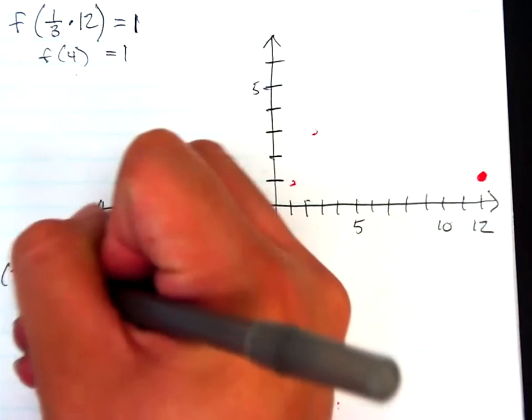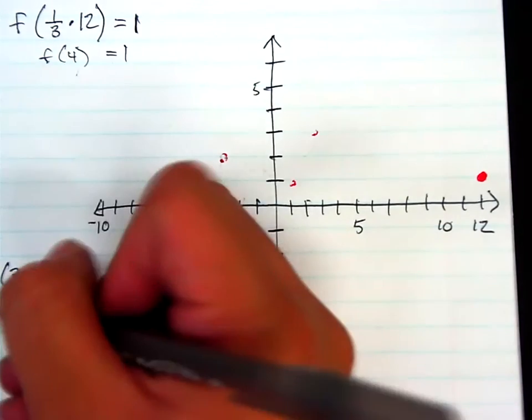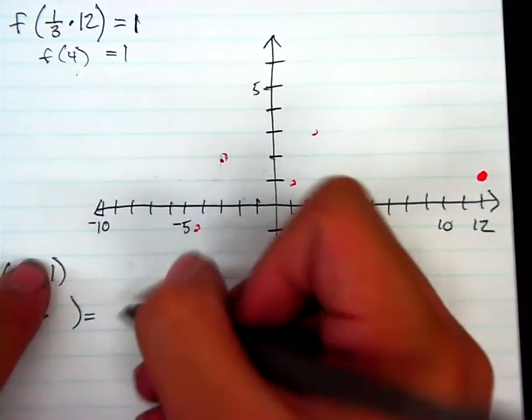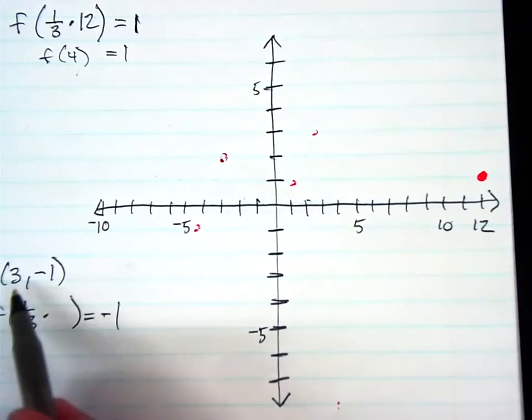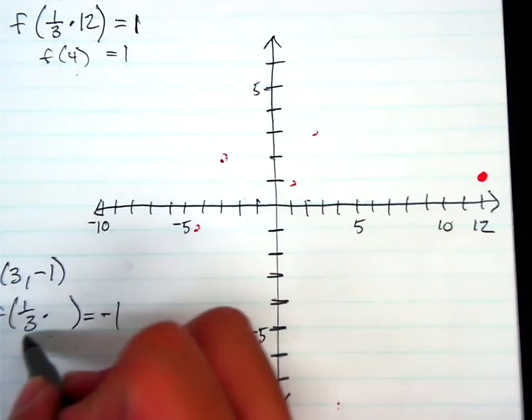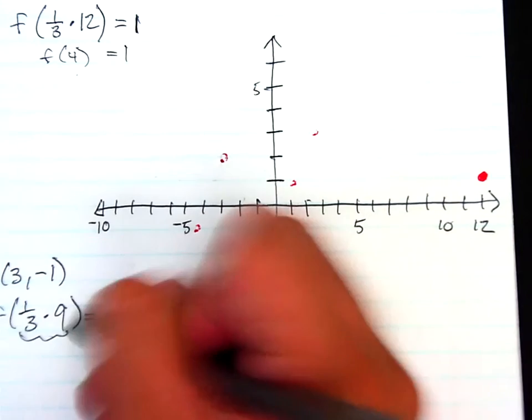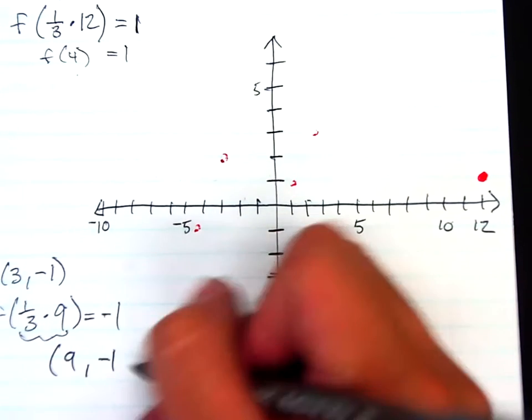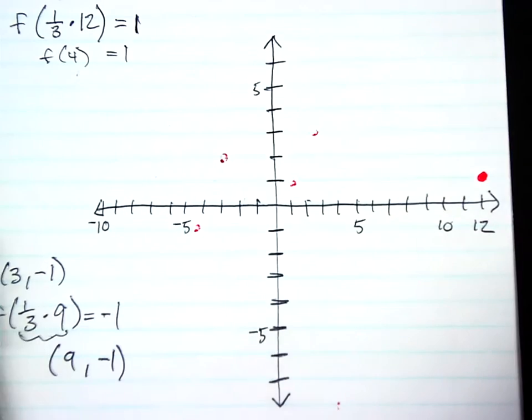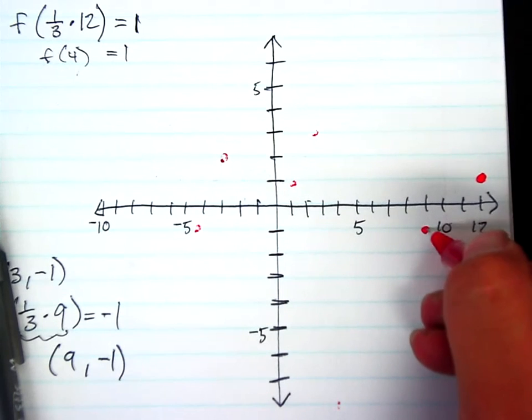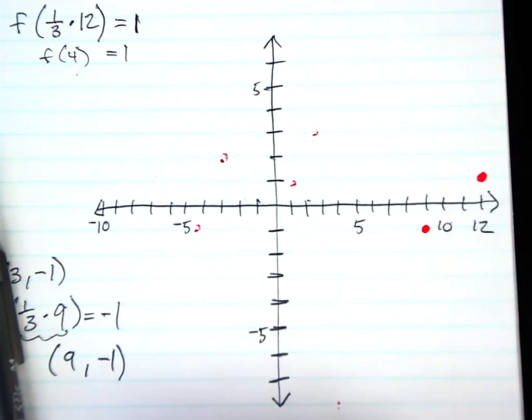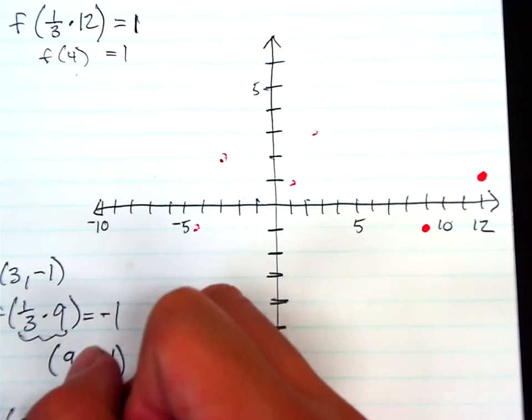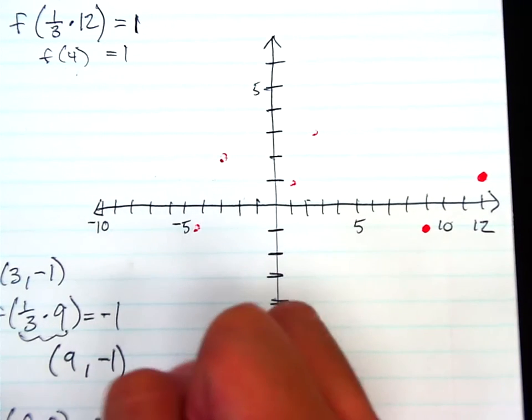The other one I have is (3, -1), working backwards. So f(1/3 times what) would give me that negative value? So in order to get the 3 I have that I want on the inside, I need to multiply by 9. So my new point is actually (9, -1), instead of (3, -1). So (9, -1). And hopefully you see the pattern by now of how it works. So our original (0, 0) luckily stays as (0, 0).